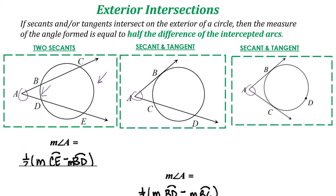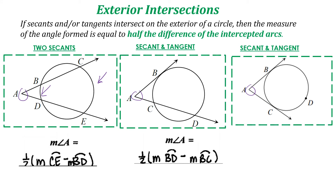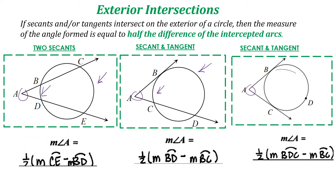For a secant and a tangent, it's one-half of arc BD minus arc BC. For two tangents, it's one-half of the major arc BDC minus the minor arc BC. In all cases, you subtract the smaller arc from the larger arc and take half — that gives you the exterior angle.